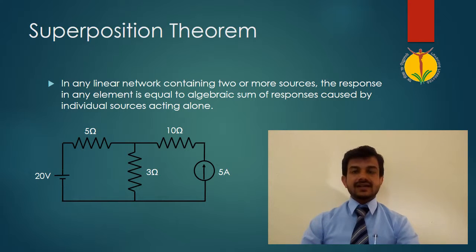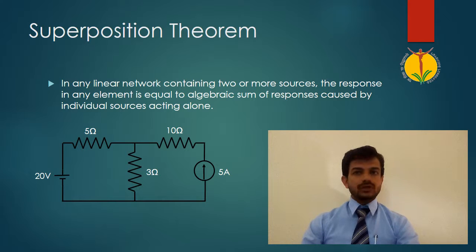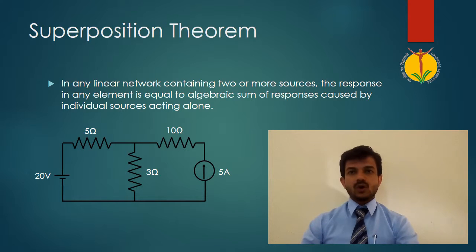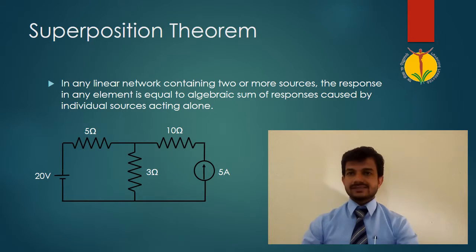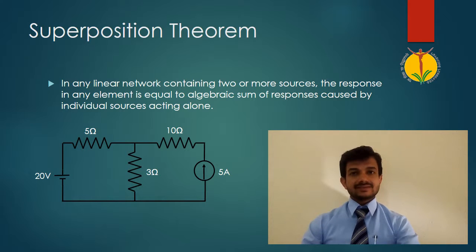The given circuit contains three resistors of 5 ohm, 3 ohm, and 10 ohm. It also includes one voltage source of 20 volts and a current source of 5 amperes. Let us analyze the response in the 3 ohm resistor. The current or voltage response in this 3 ohm resistor due to both sources will be equal to the algebraic sum of the currents due to the 5 ampere current source and the 20 volt voltage source.